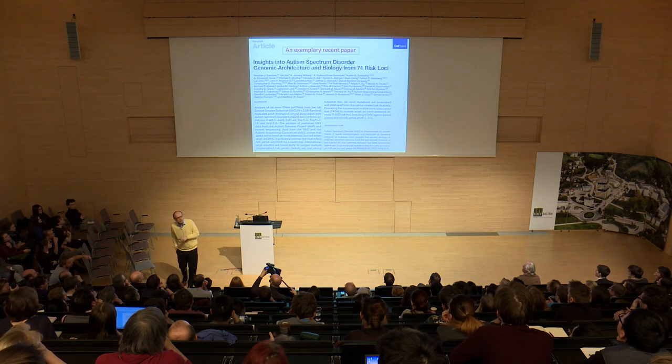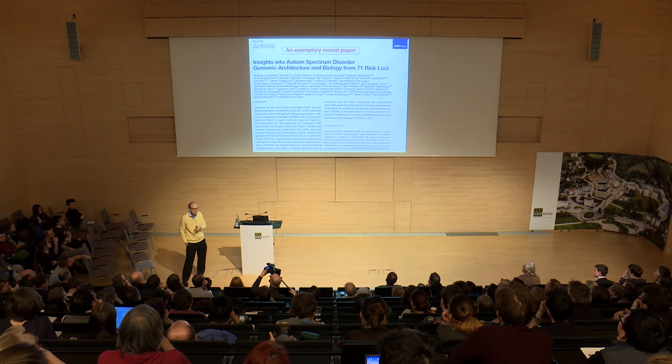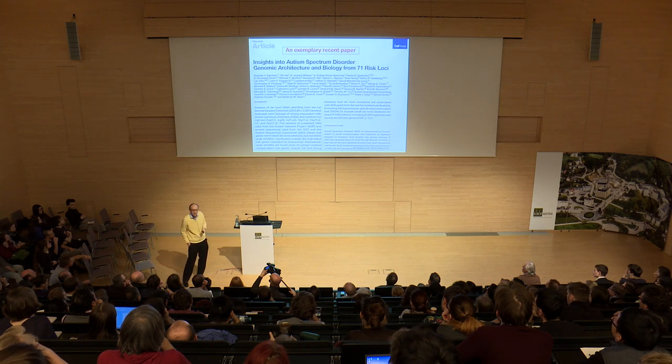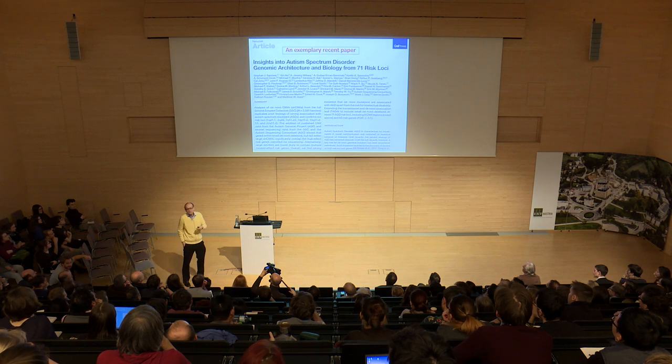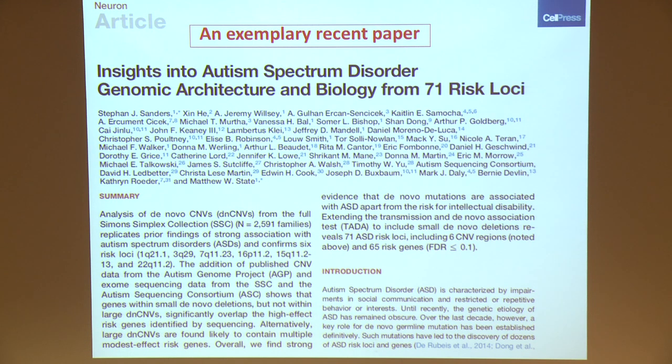The most important recent progress on this challenge has been in genetics, due to enormous technological advances in gene sequencing. Many diseases that were previously inscrutable have been probed genetically, and disorders such as schizophrenia and autism have been described in genetic terms. This led to the unexpected finding that the human genome is very fluid — it changes from generation to generation — with enormous variation even within families. Many common neuropsychiatric disorders are associated with mutations in a large number of genes, particularly autism.